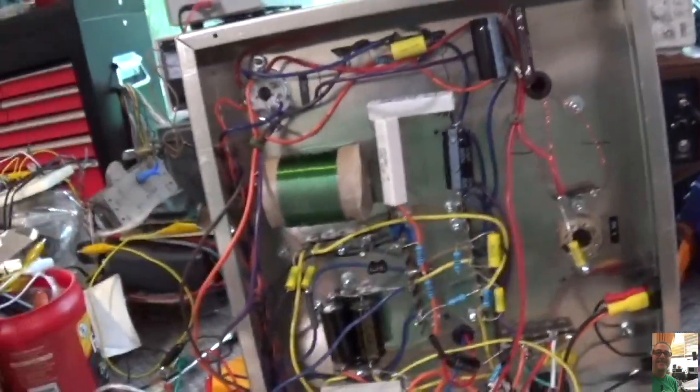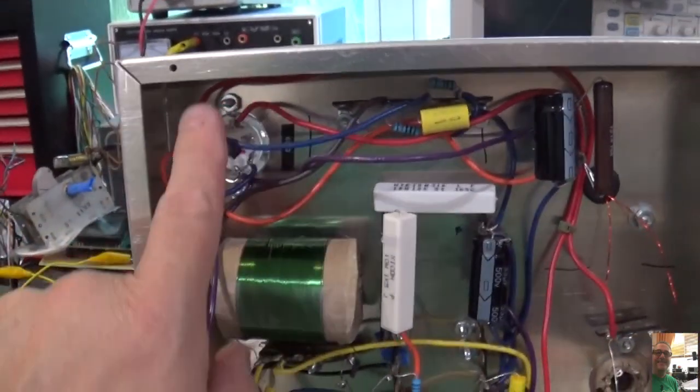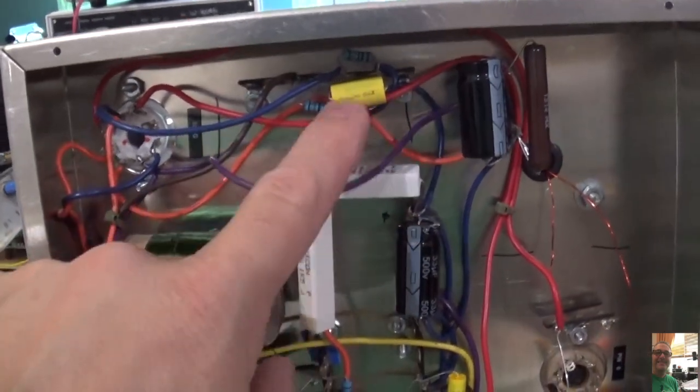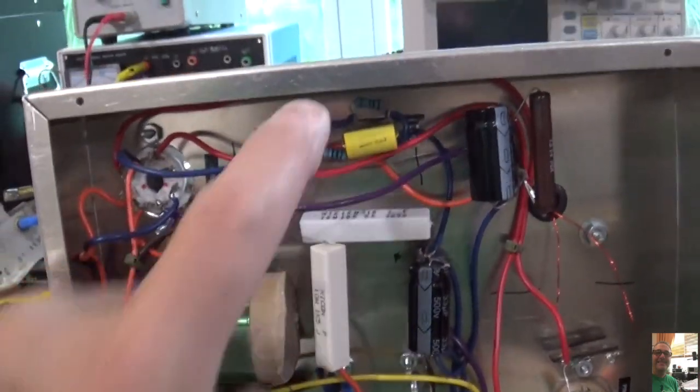On Rick's design, he's got everything connected directly to the output tube. On mine, I've got a bunch of wires running over to a terminal strip, and you see everything's crossing everything. That's a problem.